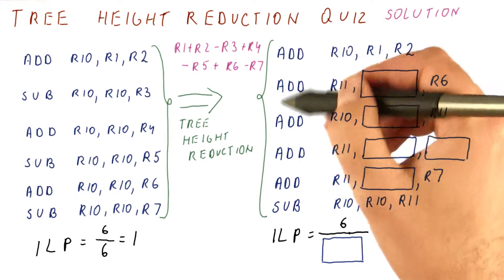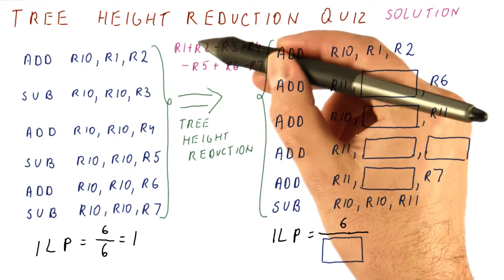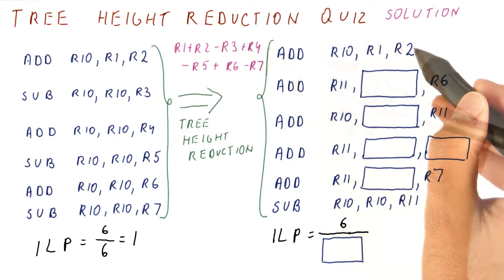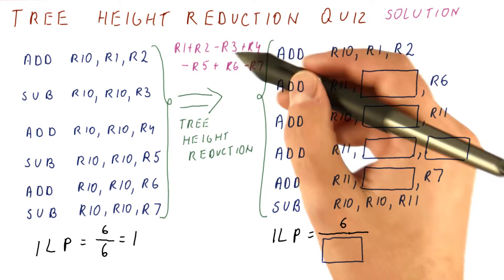How do we compute it with tree height reduction? Well, the idea is to compute R1 and R2, that's what we are doing here, and then compute the rest of the things and then add them up in a tree.